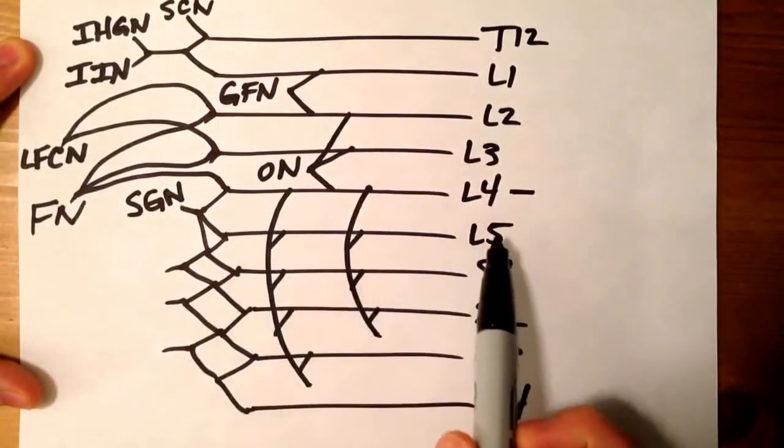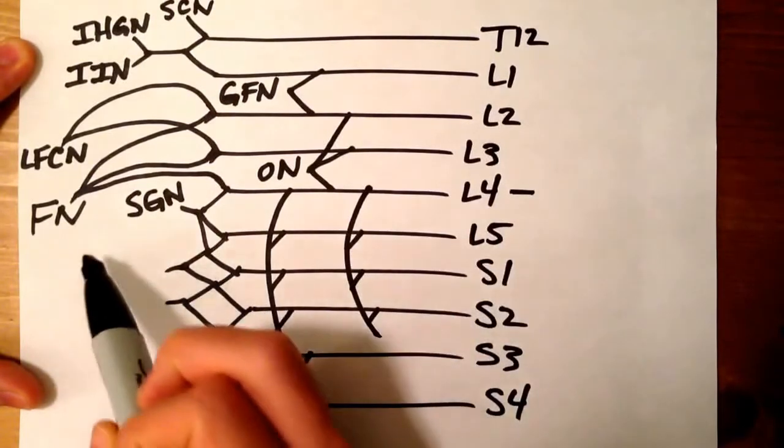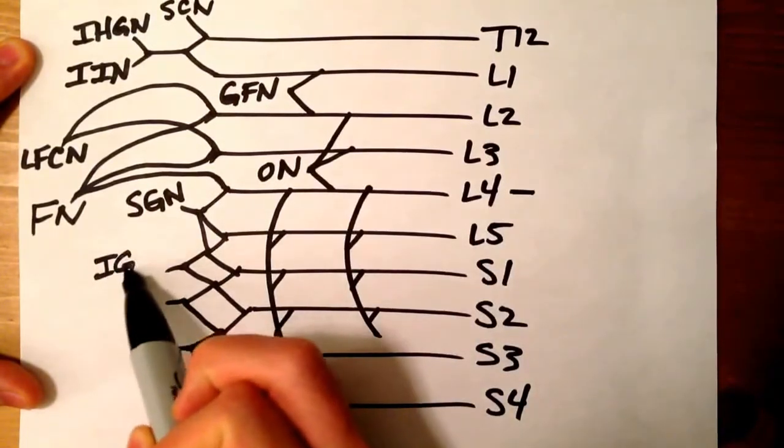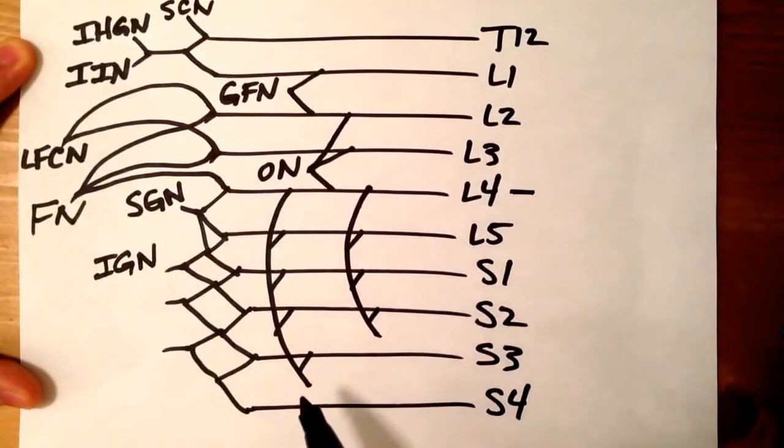Between L5 and S2, that's going to be your inferior gluteal nerve.